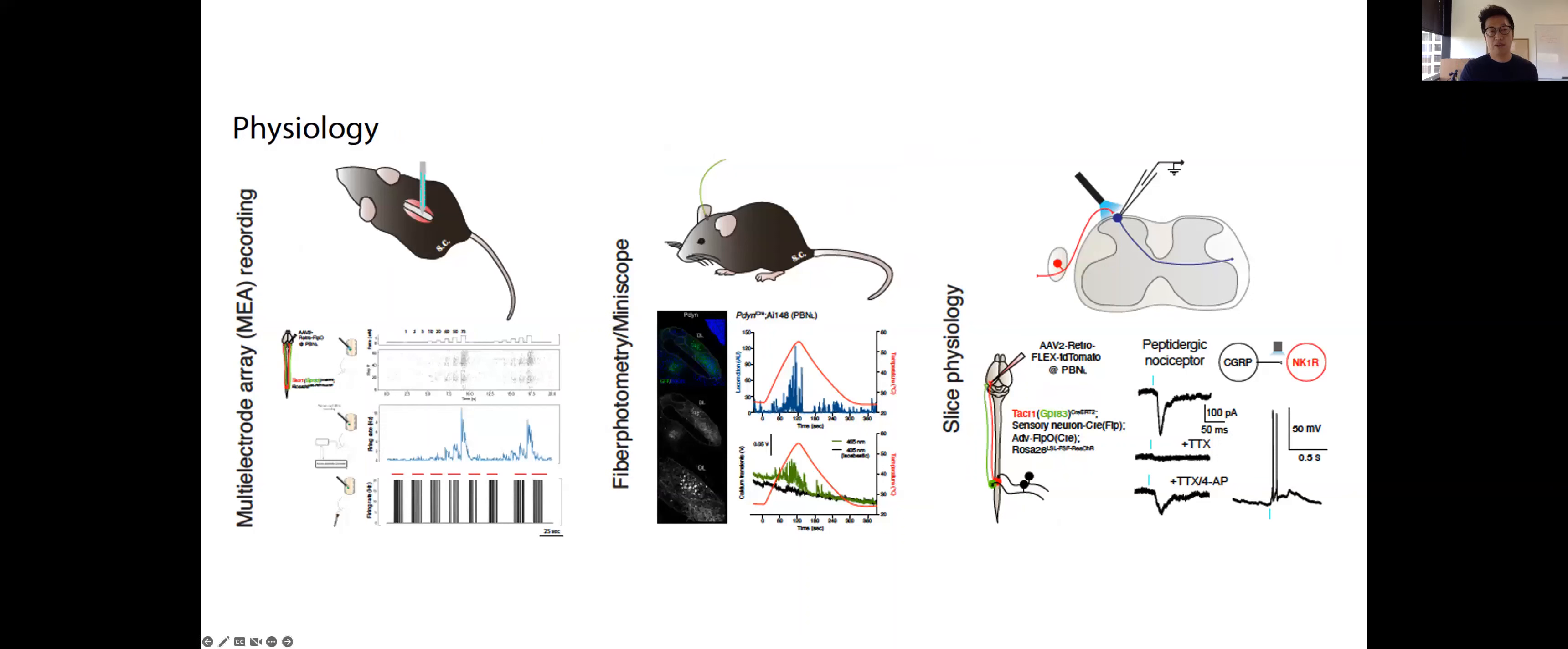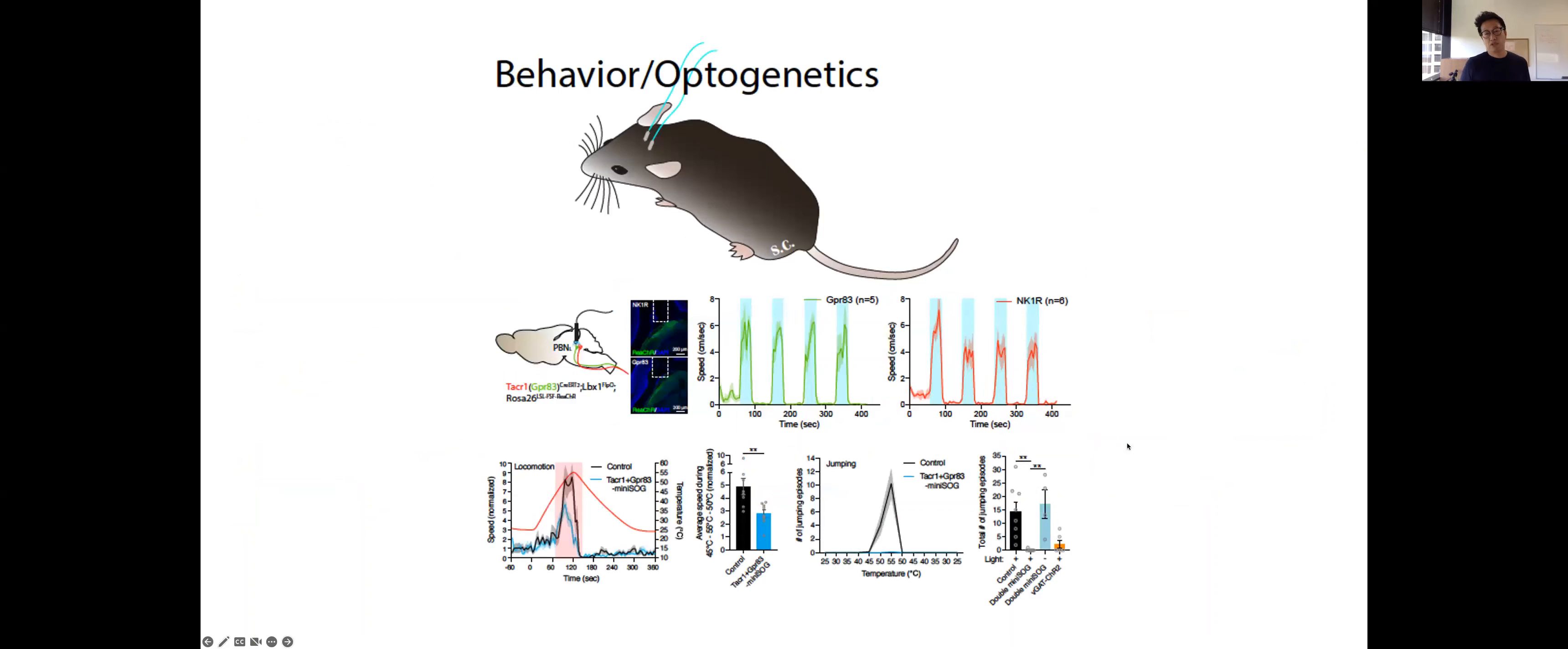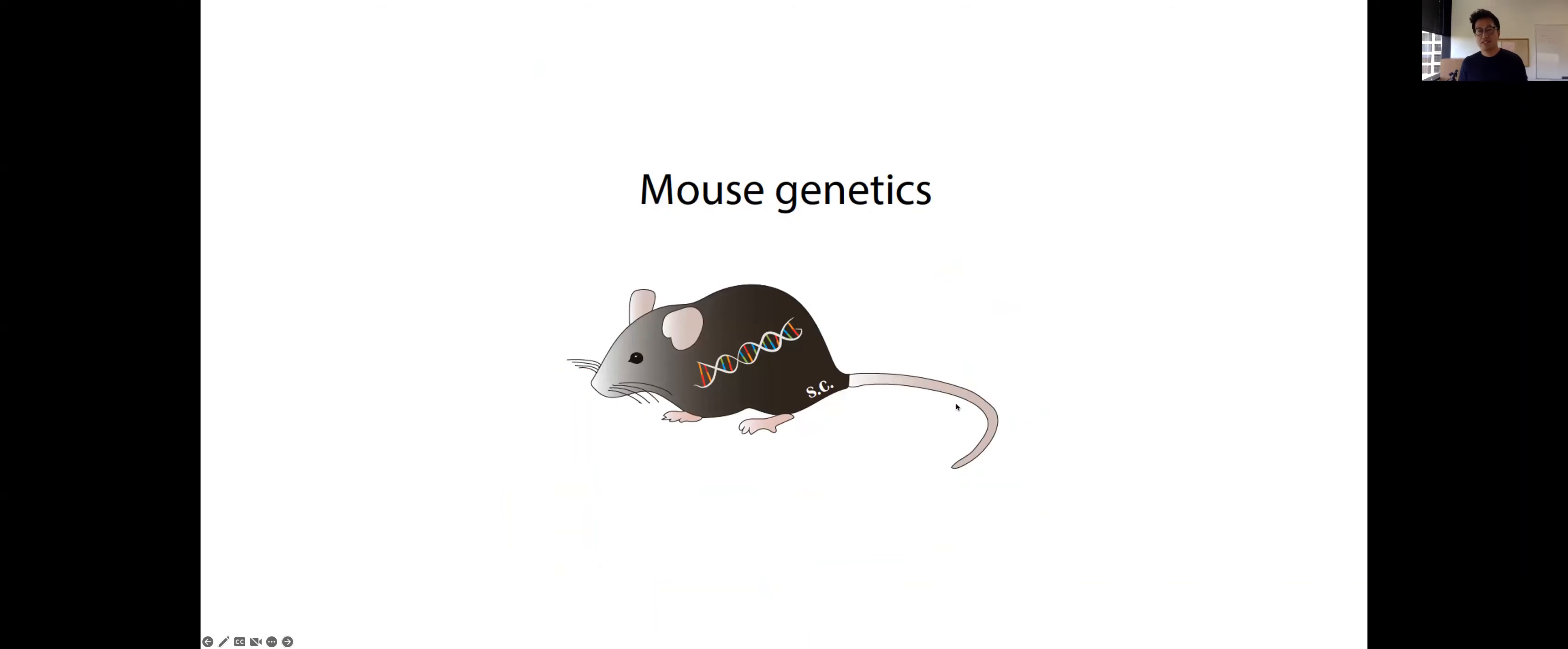We will use optogenetic and chemogenetic tools that enable the perturbation of specific circuit components to assess the system-level changes manifested as different behavioral outputs. Really, the key to all these approaches is mouse genetic tools that allow us to see and listen and manipulate the neural circuits for touch and pain at the level of molecules, cells, and systems.